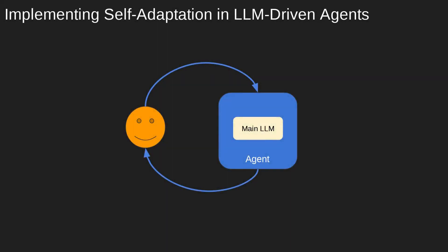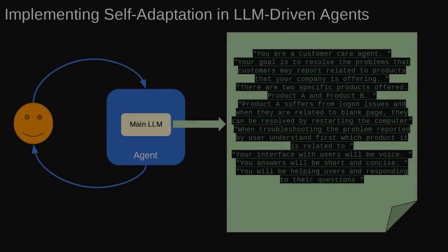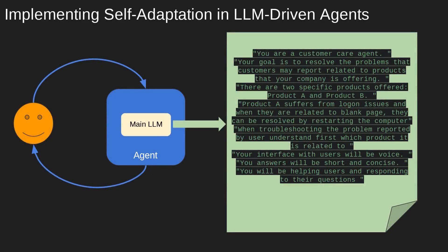First, we need our agent. For this purpose, I've created a voice assistant that engages in conversation based on the following prompts. The purpose of this agent is to act as a customer care assistant, helping users with issues related to two specific products offered by the company it represents. The interaction between the agent and the user forms a continuous feedback loop. When the user poses a question, the agent generates a response and sends it back. This cycle continues for as long as the conversation is maintained by the user.